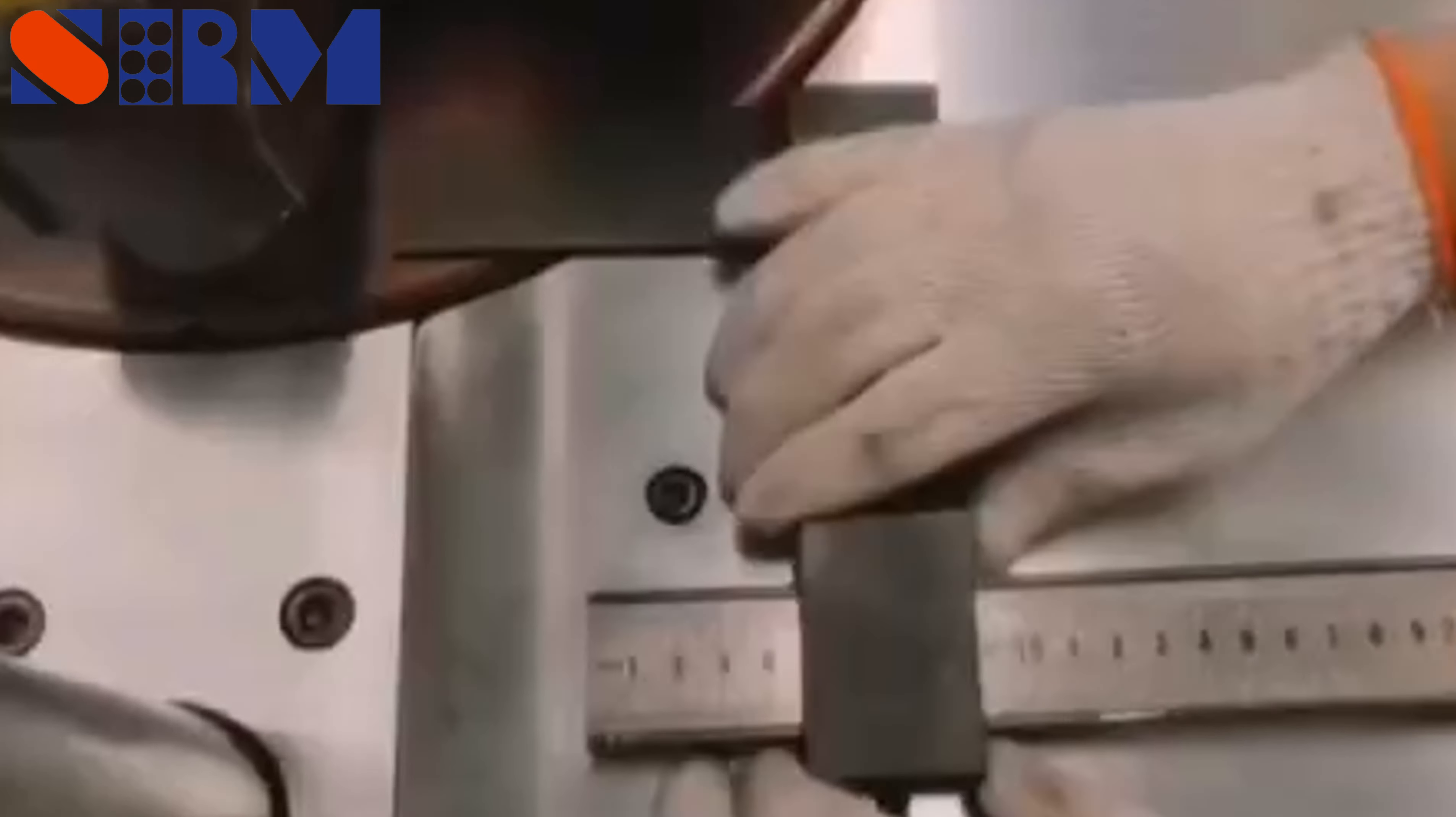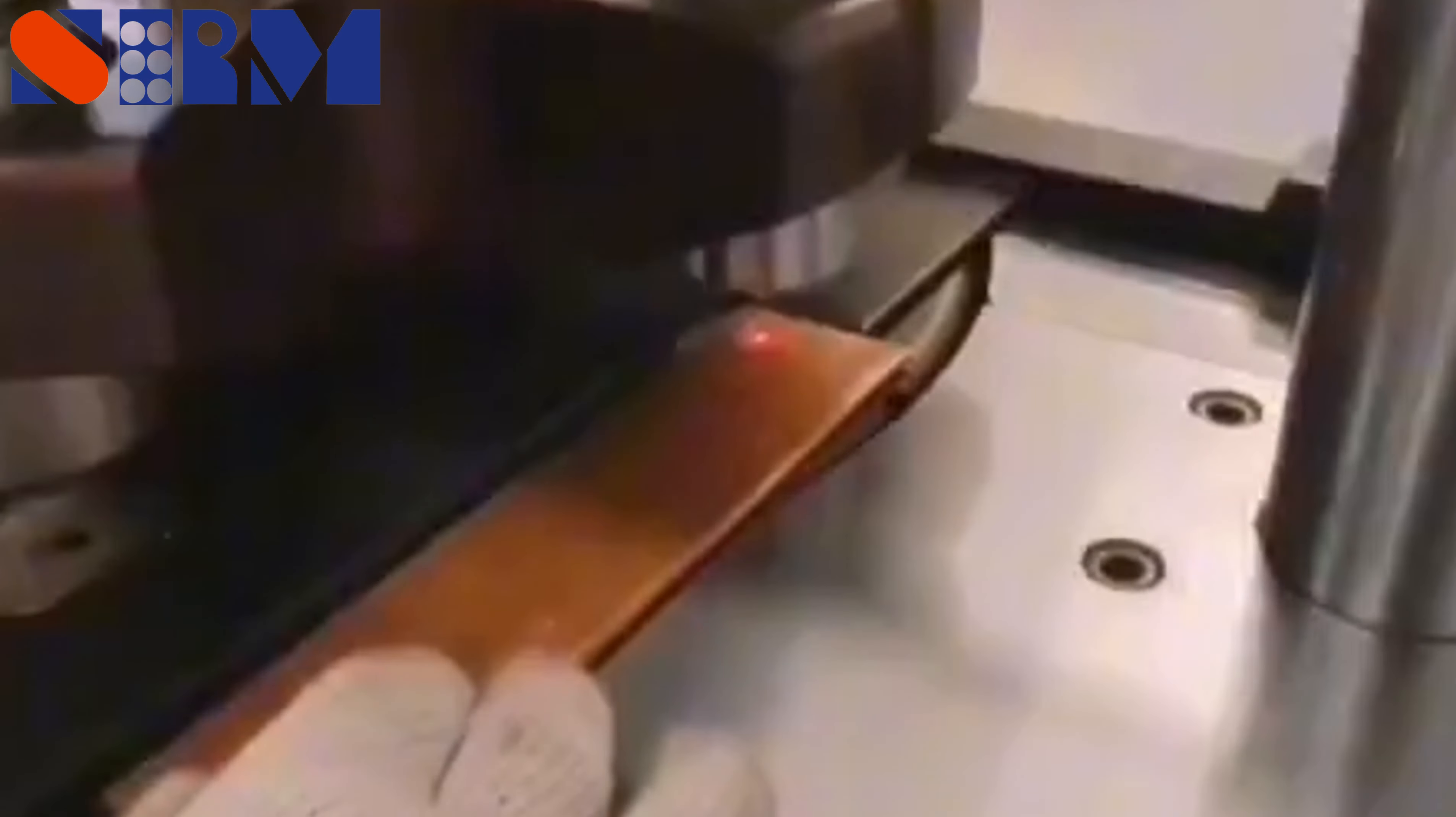Fix the position of the copper bar by adjusting the locking device and the gear ruler. Put in the copper busbar and press the foot switch to start punching.